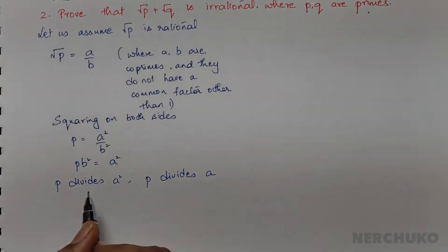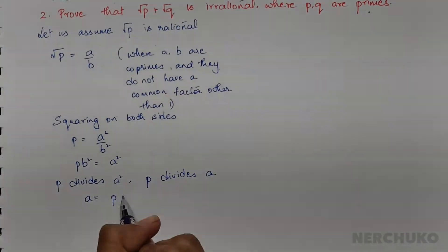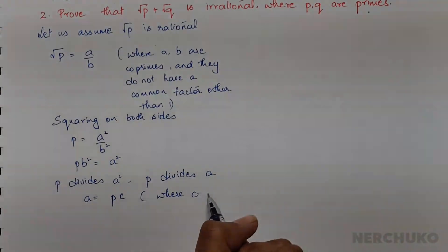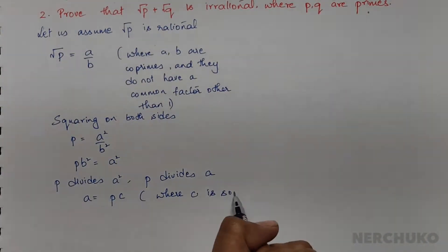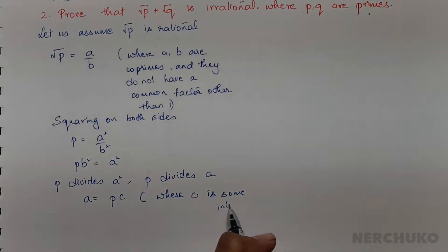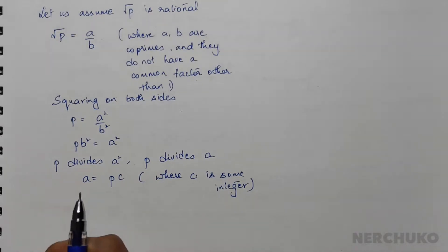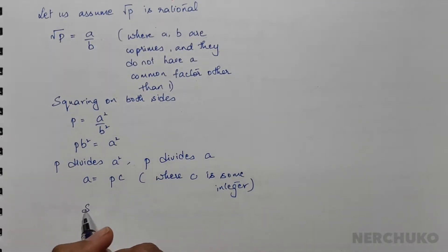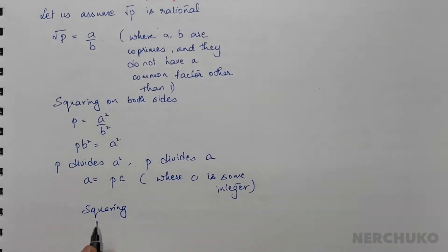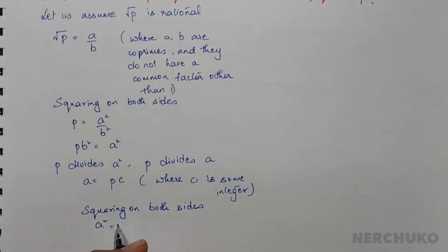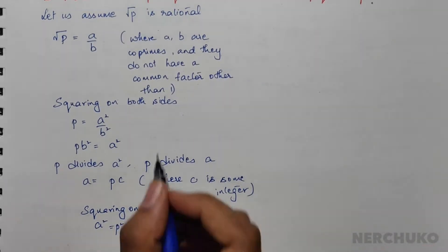Now let me write this as a equal to p into c, where c is some integer. If I square on both sides, I would have a square equal to p square c square.